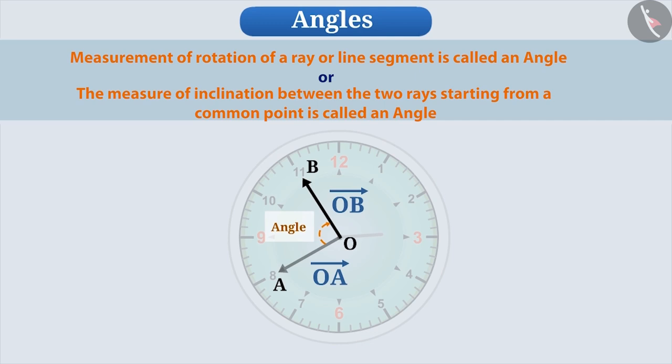Both rays making angles are called the arms or sides of that angle. And the common starting point of both rays is called the vertex. A small arc is made on the vertex to show angle between one ray to the other.